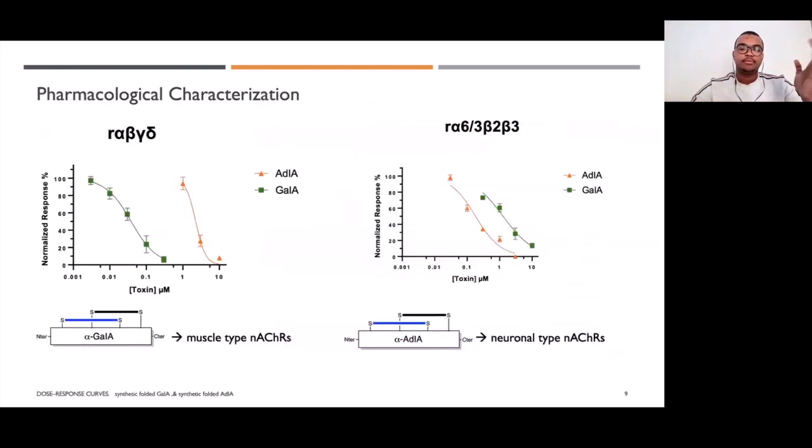So for now, we are doing pharmacological characterization, and the preliminary results on these two conotoxins show us that G1A is more potent on muscle-type nicotinic acetylcholine receptors than AD1A, and AD1A has high affinity on neuronal-type nAChRs. Here we can see that even with alpha-conotoxins, we can target different types of nAChRs. So this is why conotoxins are very interesting because they can help us identify the biological activity of these nAChRs through alpha-conotoxins.